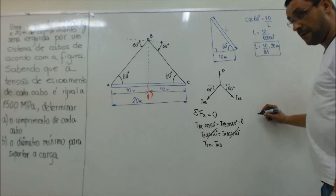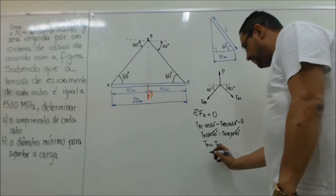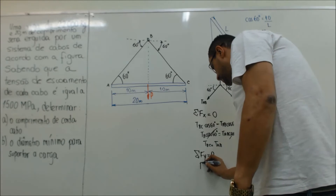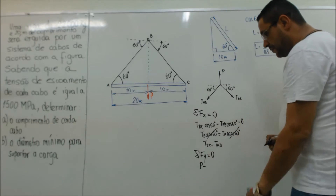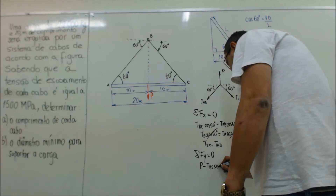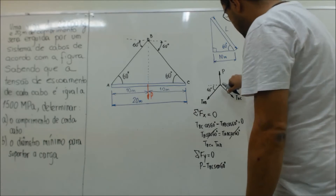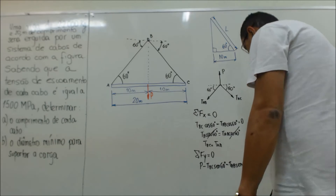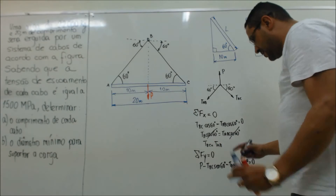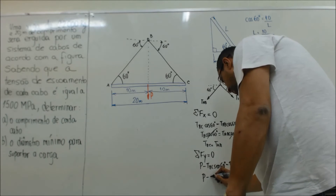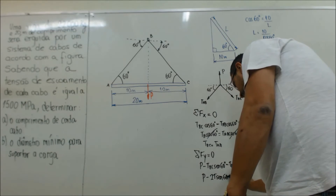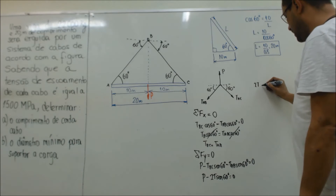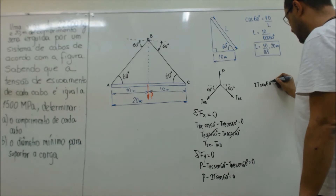Agora vou aplicar o equilíbrio na vertical. A soma das forças verticais igual a zero. O peso está para cima, menos — como os dois cabos são iguais, vou escrever — TBC · seno de 60, menos TAB · seno de 60, igual a zero. Como ambos são iguais, vamos chamar tudo de T: P menos 2T · seno de 60 igual a zero. Daqui eu consigo escrever: 2T · seno de 60 é igual ao peso.